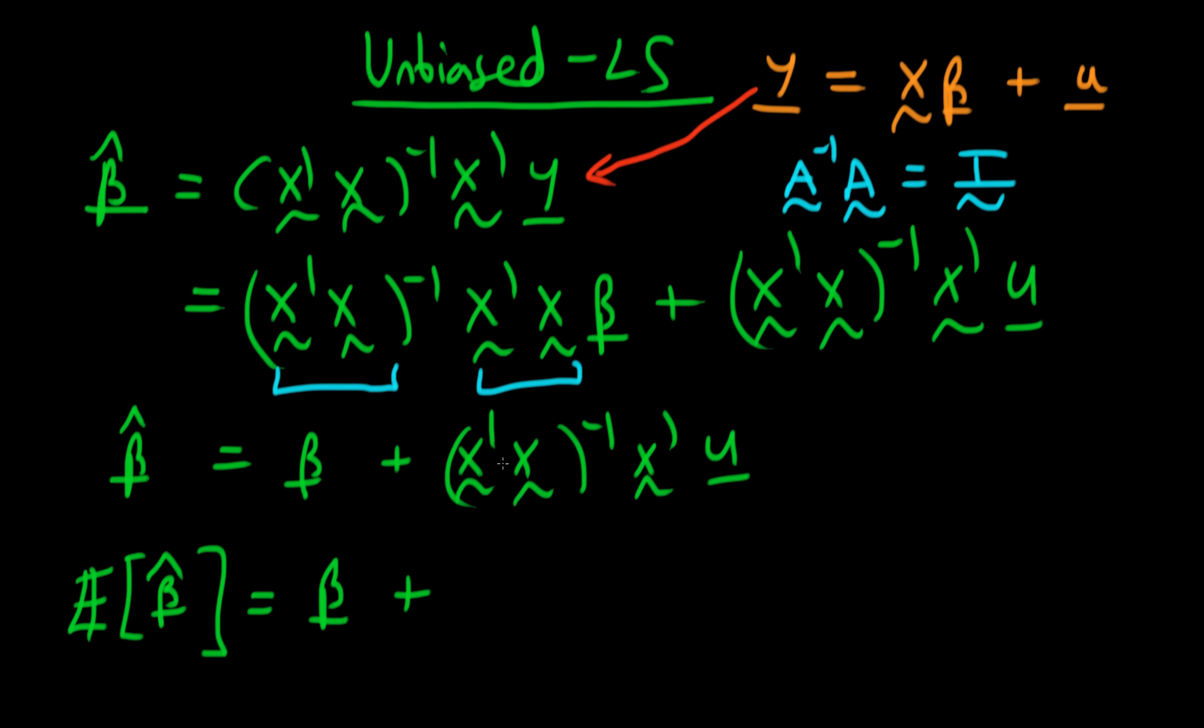And for this second term here we have to use the zero conditional mean of errors assumption. And if we do use that then it turns out that the expectations operator just passes straight through all of these x terms here because our errors, our u, are completely independent of the x terms.